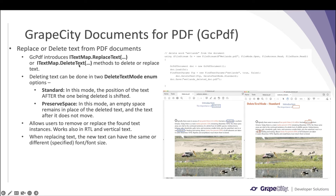The two new methods introduced are itextmap.deleteText and itextmap.replaceText. You pass the FindText parameter class object into these methods. We have also introduced the DeleteTextMode enum, which provides two options. In the standard option, the text next to the deleted text moves to replace its position. In preserve space mode, only the text is deleted and the adjacent word does not shift to fill the gap.